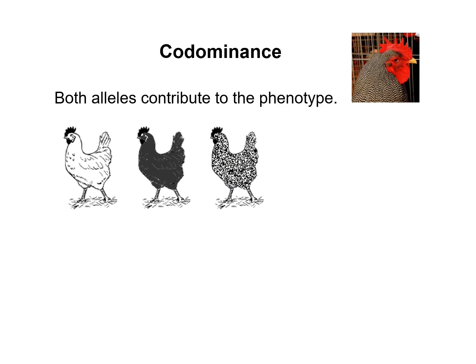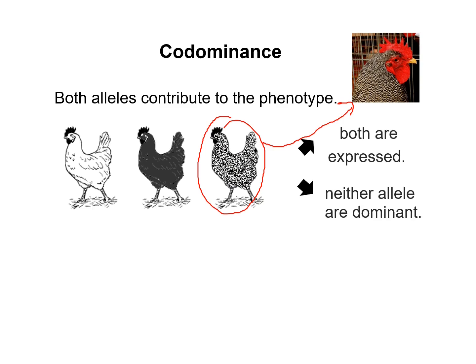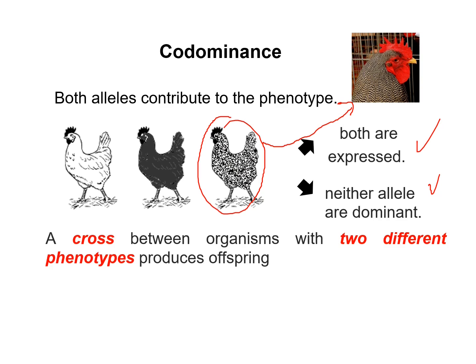Similar to incomplete dominance, both alleles contribute to the phenotype and both are expressed in the offspring. It doesn't look gray — it looks white and black, so you can see both dots. Both the white and black alleles are expressed; neither of the alleles is dominant.